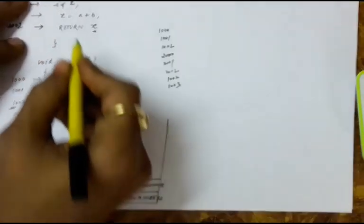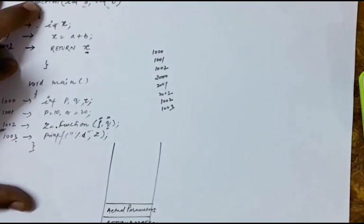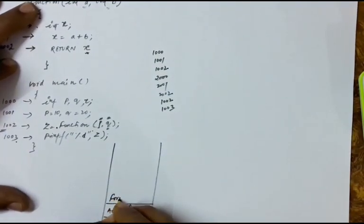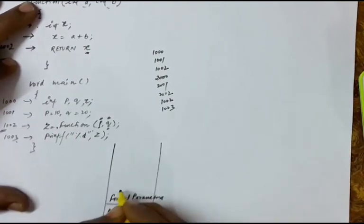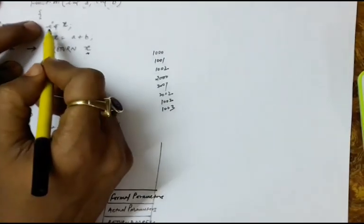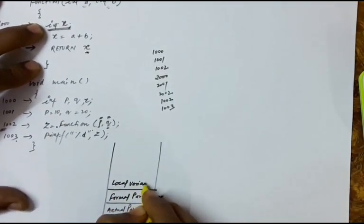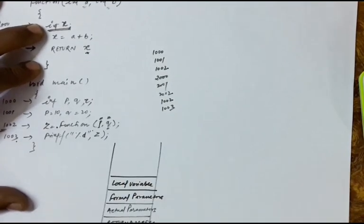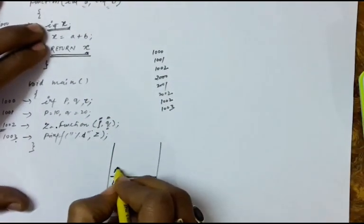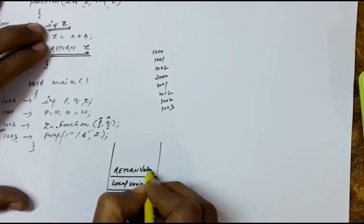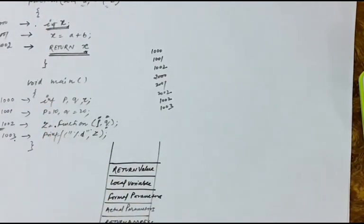When the function is called, the values of p and q are saved in variables a and b, which are new variables. You should know what the formal parameters are — a and b are the formal parameters. Then, in the function definition, you have taken a local variable, so you should store space for the local variable in the activation record. And since you are returning the value x, you should also store the return value in the activation record.